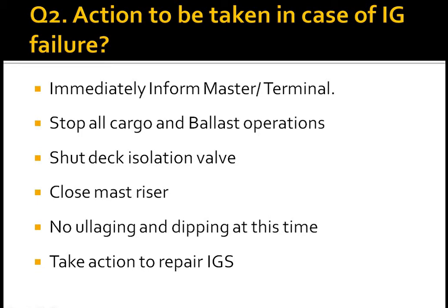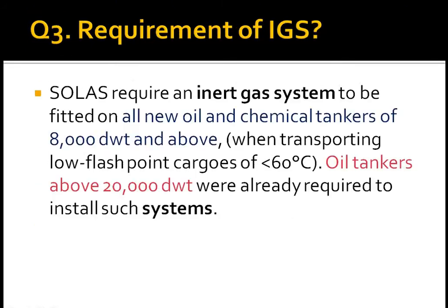Question 2: actions to be taken in case of IG failure. First, immediately inform the master or terminal. Second, stop all cargo and ballast operations. Third, shut the deck isolation valve. Fourth, close the master valve. Fifth, no ullaging and dipping at this time. Sixth, take action to repair the inert gas system.